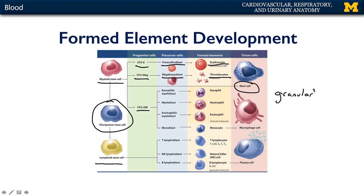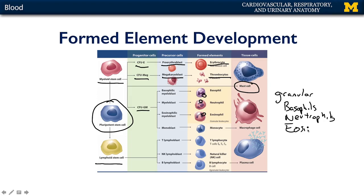Granular leukocytes are white blood cells that contain tiny little granules that they can release into the environment. They are basophils, neutrophils, and eosinophils. I always remember this as my good friend BEN — B-E-N: basophil, eosinophil, neutrophil.